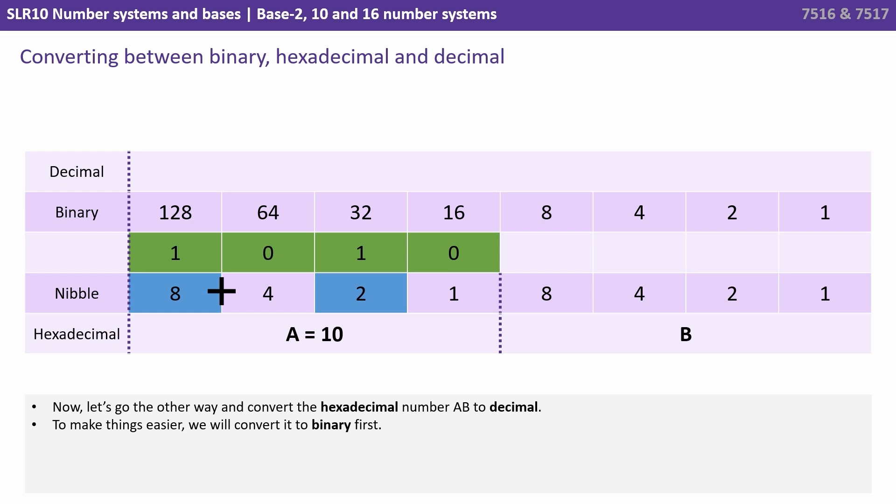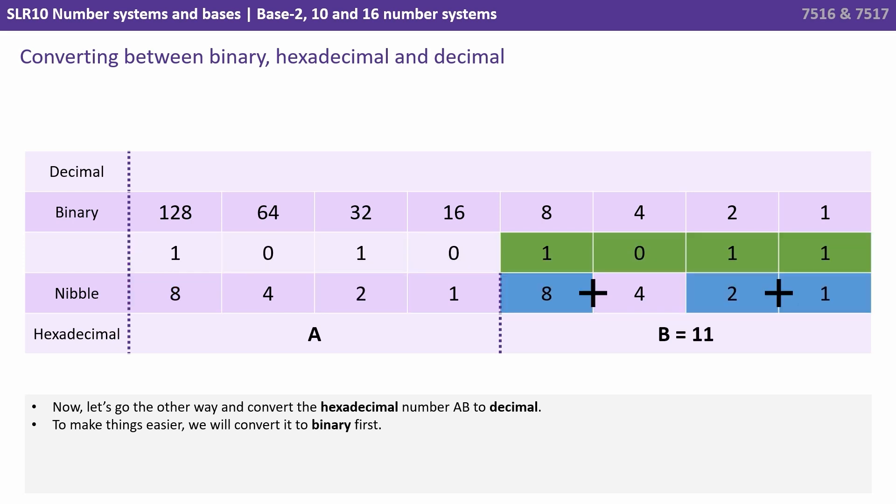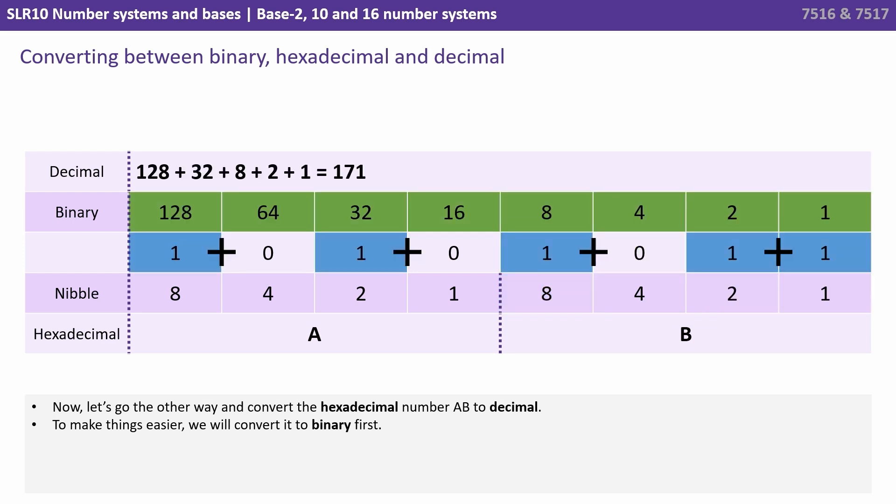Do the same thing for the right nibble. So B in hexadecimal is 11 in decimal. That's an 8 plus a 2 plus a 1, 8, 9, 10, 11. So that's 1, 0, 1, 1. Now we have the full binary number written out. We apply the complete binary weighting line and add all the columns that have 1s in. That's 128 plus a 32 plus an 8 plus a 2 plus a 1. So the number AB in hexadecimal is 171 in base 10 decimal.